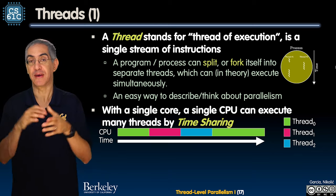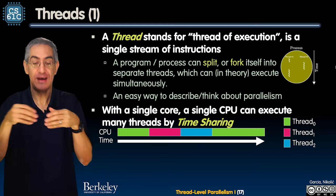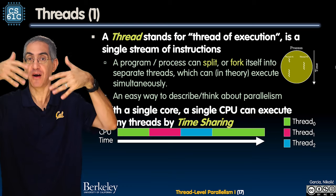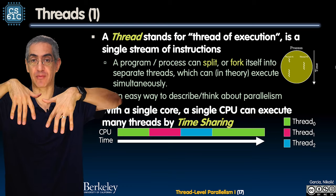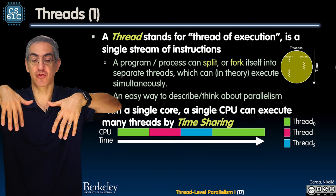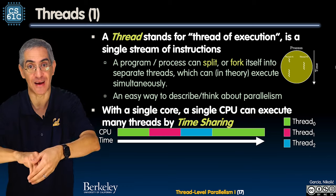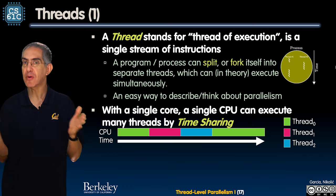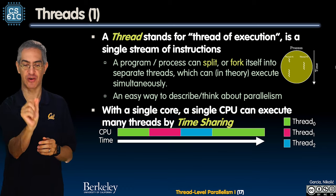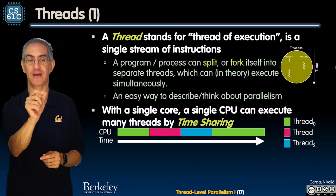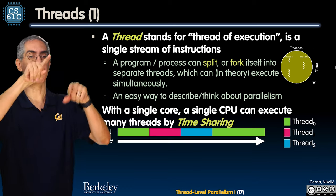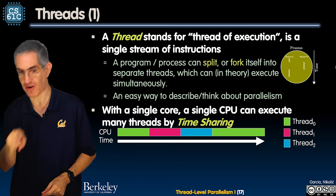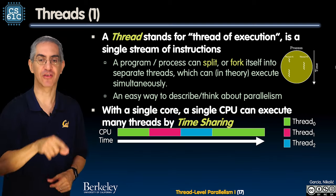A program within `a.out` could split or fork itself to have multiple threads of execution, all running at the same time. And then it might have a way to join them back together to get a result. It's an easy way to think about parallelism — a single thread of execution, like a single finger following: I'm on this line, now this line, now I make a function call, now I return. That's a single thread of execution.